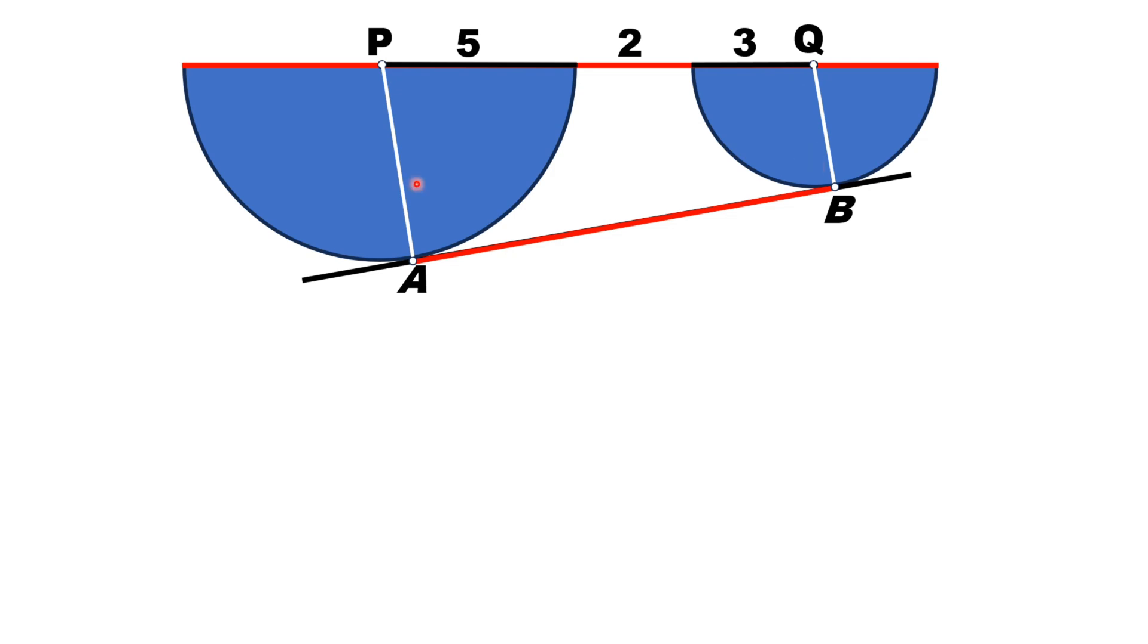From circle theorem, the radial line is always perpendicular to the tangential line. So the angle PAB is 90 degrees. And in the same manner, angle at point B is 90 degrees.